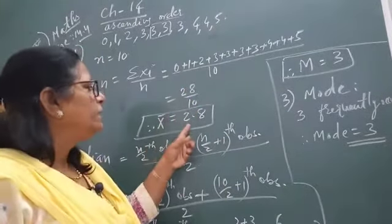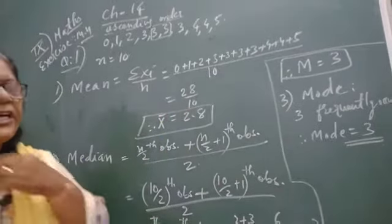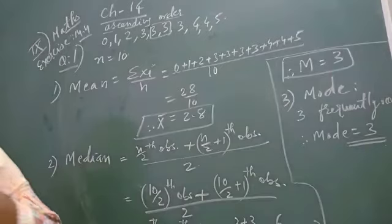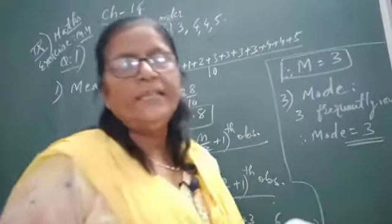If we divide then we get 2.8. So the mean of the data is 2.8. Now second we have to find the median.